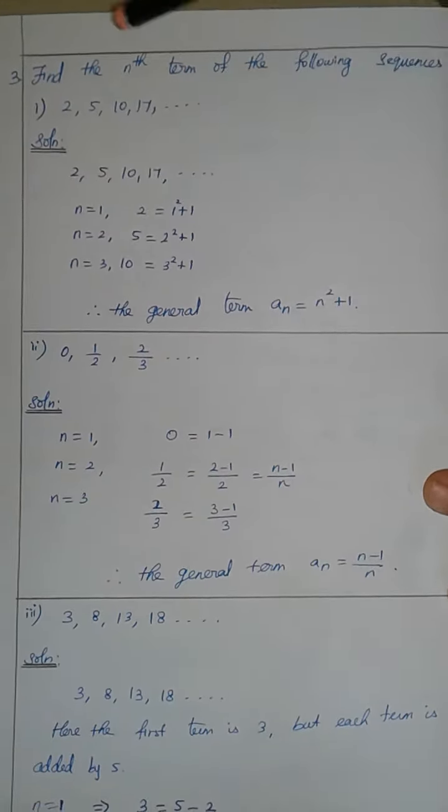The next sequence is 3, 8, 13, 18. The first term is 3, the second term is 8. The difference is 5, and the difference remains 5 throughout — it is the same.